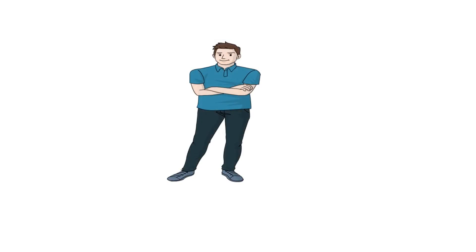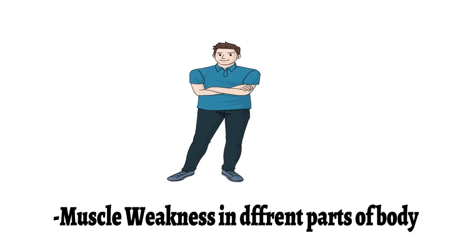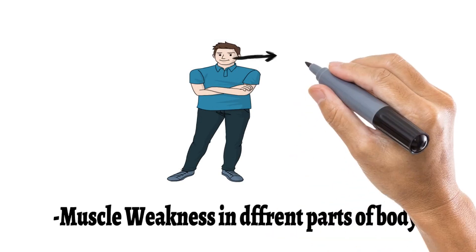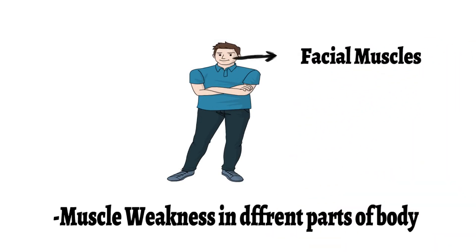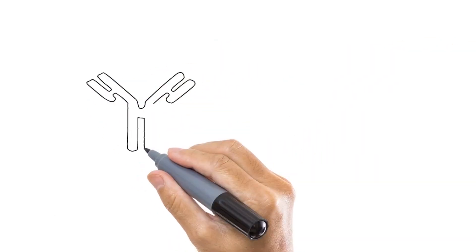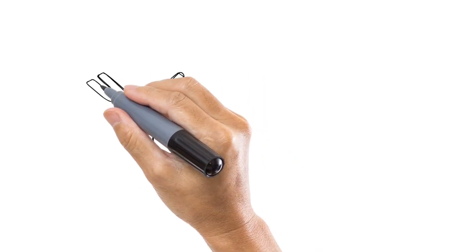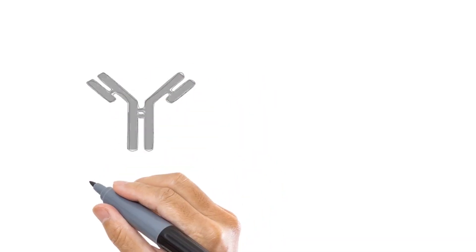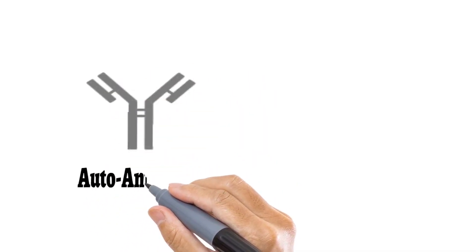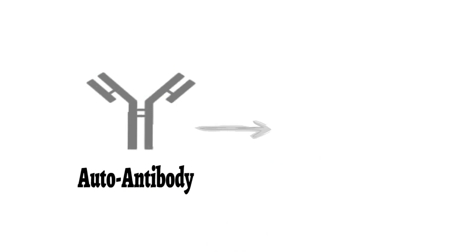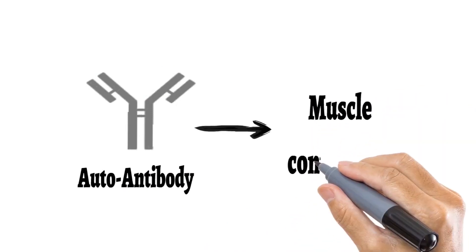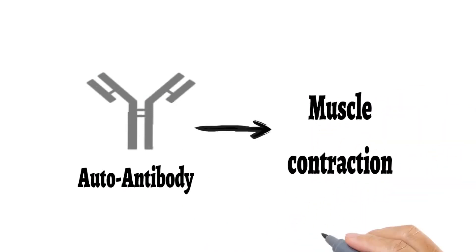The person with Myasthenia Gravis experiences muscle weakness in different parts of the body, but this specially includes the facial muscles. The reason for muscle weakness is the production of an autoantibody in the affected person's body, which interferes with the normal process of muscle contraction.